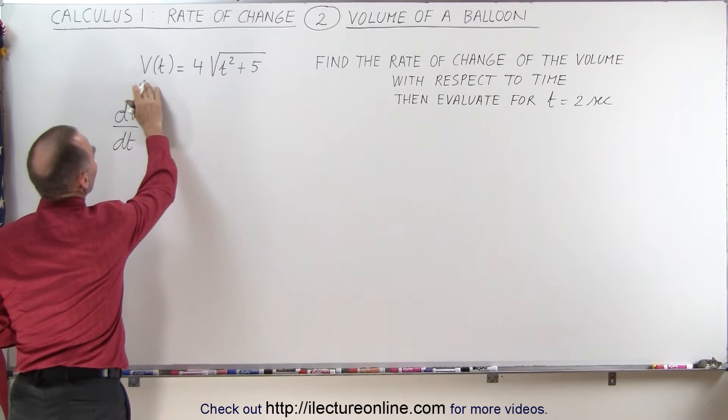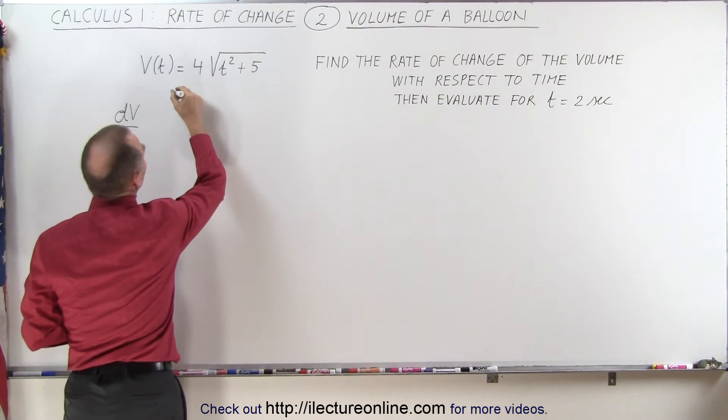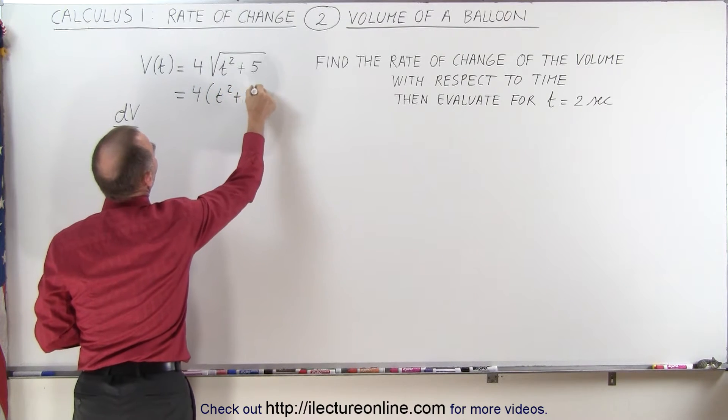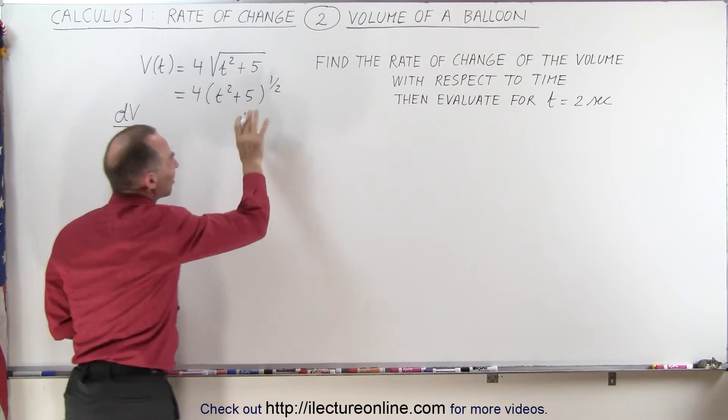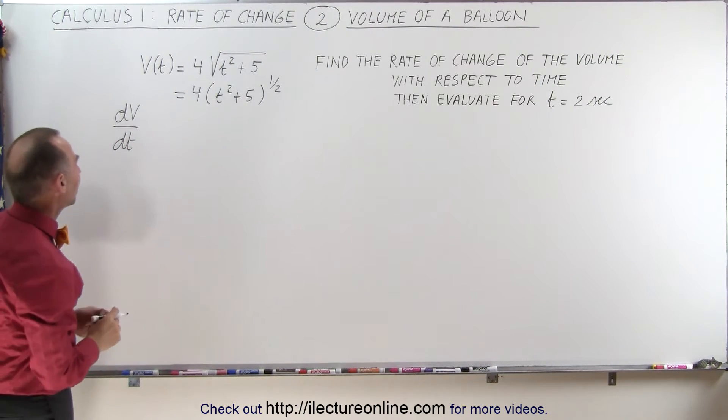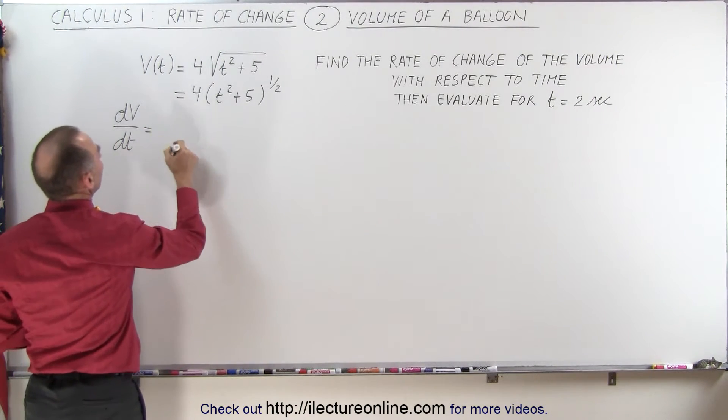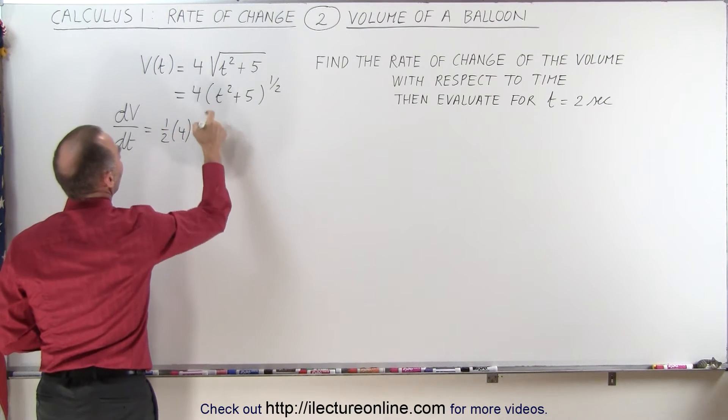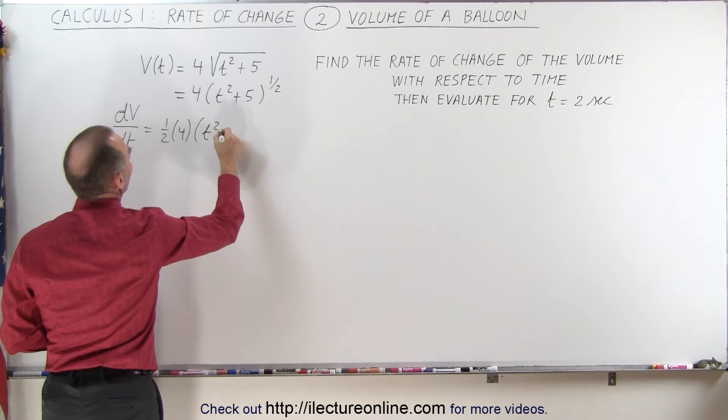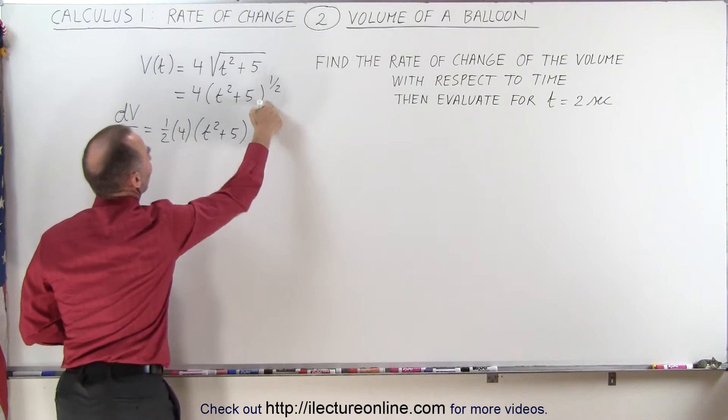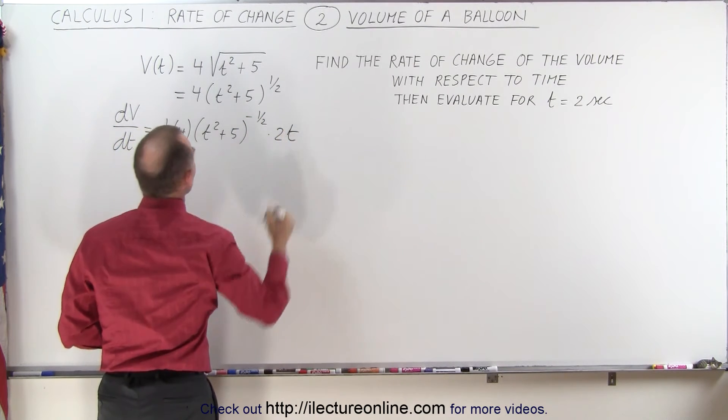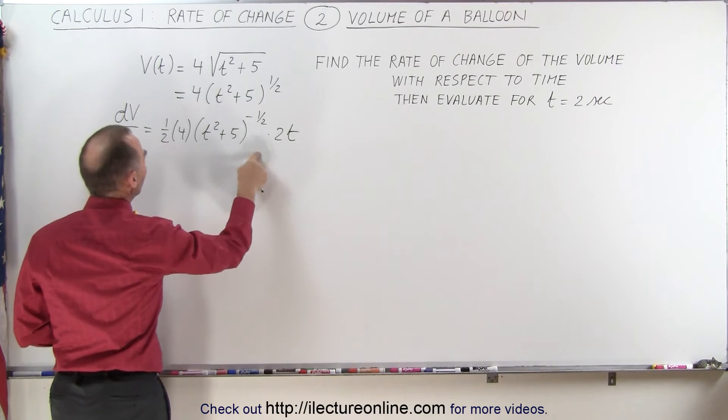So we're going to take the derivative of this with respect to time. So let's rewrite this as 4 times (t² + 5) to the 1/2 power. That makes it easier to see what the derivative looks like. And so this then becomes equal to 1/2 times 4 times the quantity (t² + 5), subtract 1 from the exponent, minus 1/2, times the derivative of what's inside, so times 2t.